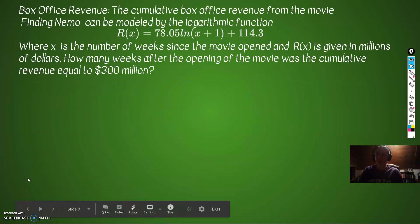So let's take a look at our first example. The cumulative box office revenue from the movie Finding Nemo can be modeled by the logarithmic function R(x) = 78.05 ln(x+1) + 114.3, where x is the number of weeks since the movie opened, and R(x) is given in millions of dollars.